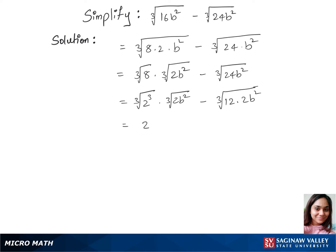Now we have 2 times cubic root of 2b squared minus, we'll separate the cubic root here. So that's cubic root of 12 times cubic root of 2b squared.